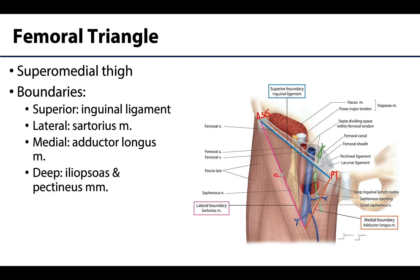The lateral boundary is the sartorius muscle, which extends all the way from the coxal bone to the tibia. In fact, this is the longest muscle in the body, and it also serves as the lateral boundary of the femoral triangle.